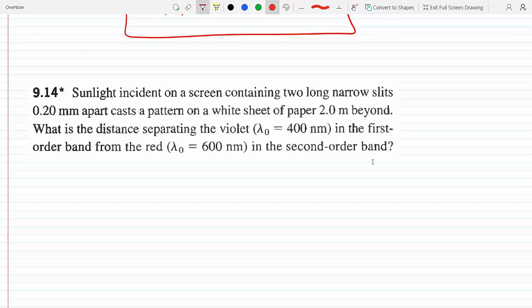Let's see what these givens are. So two long narrow slits, 0.2 millimeters apart, so that's the separation. That's a, which is 0.20 times 10 to the minus 3, we need to change it to meters.